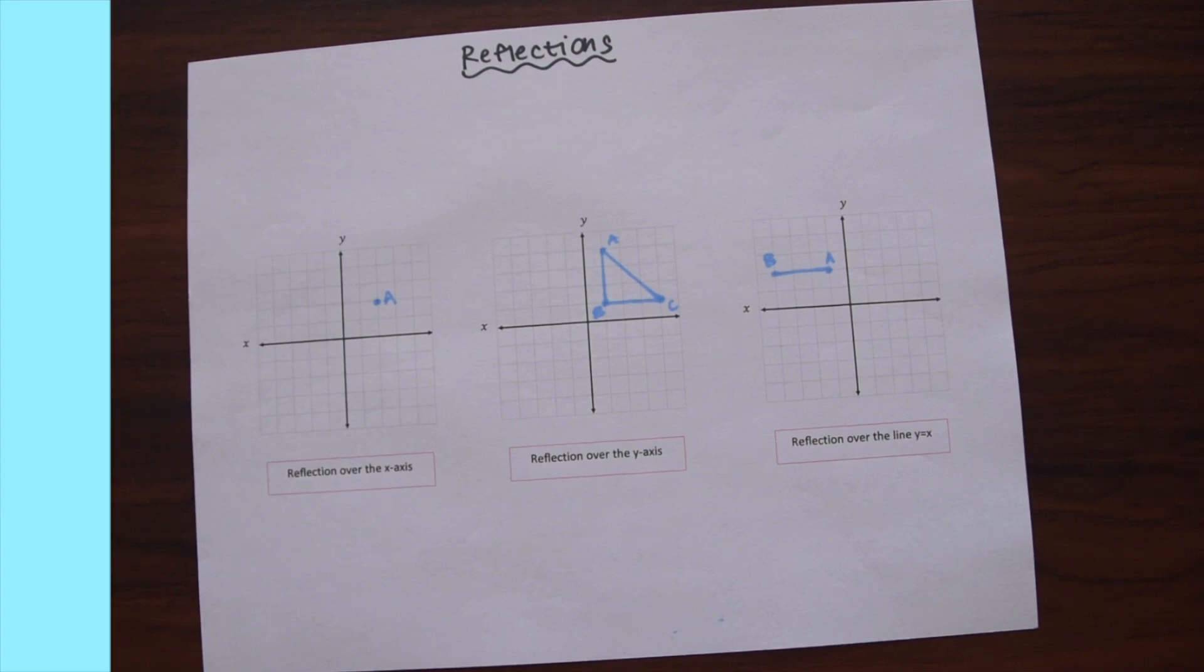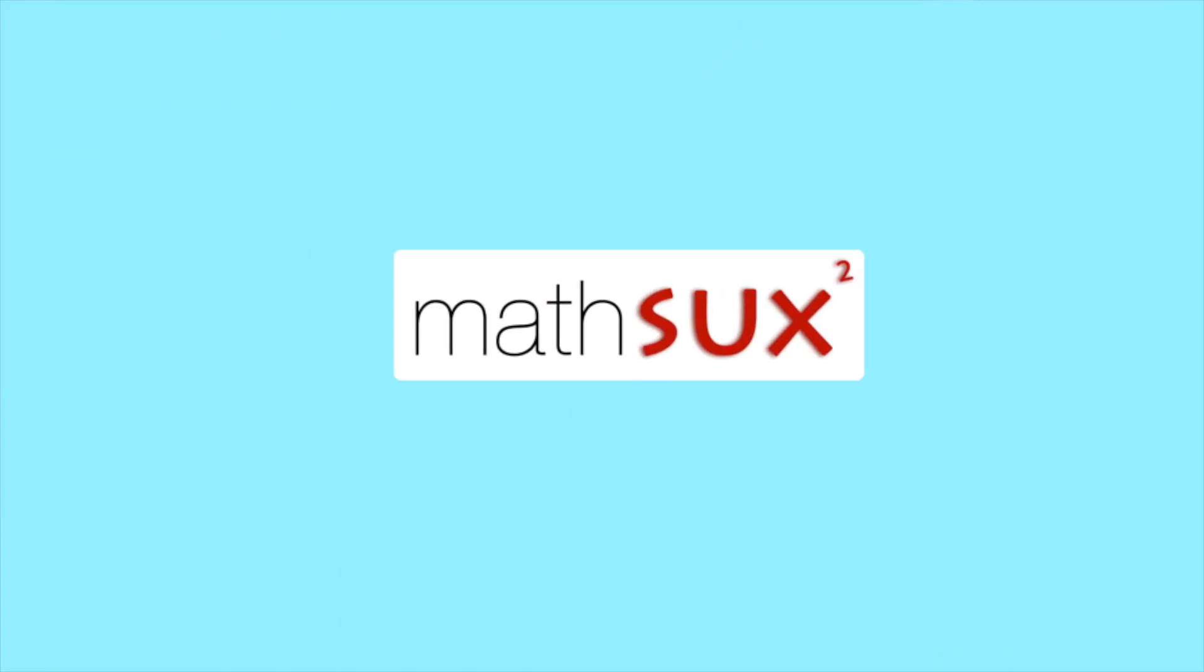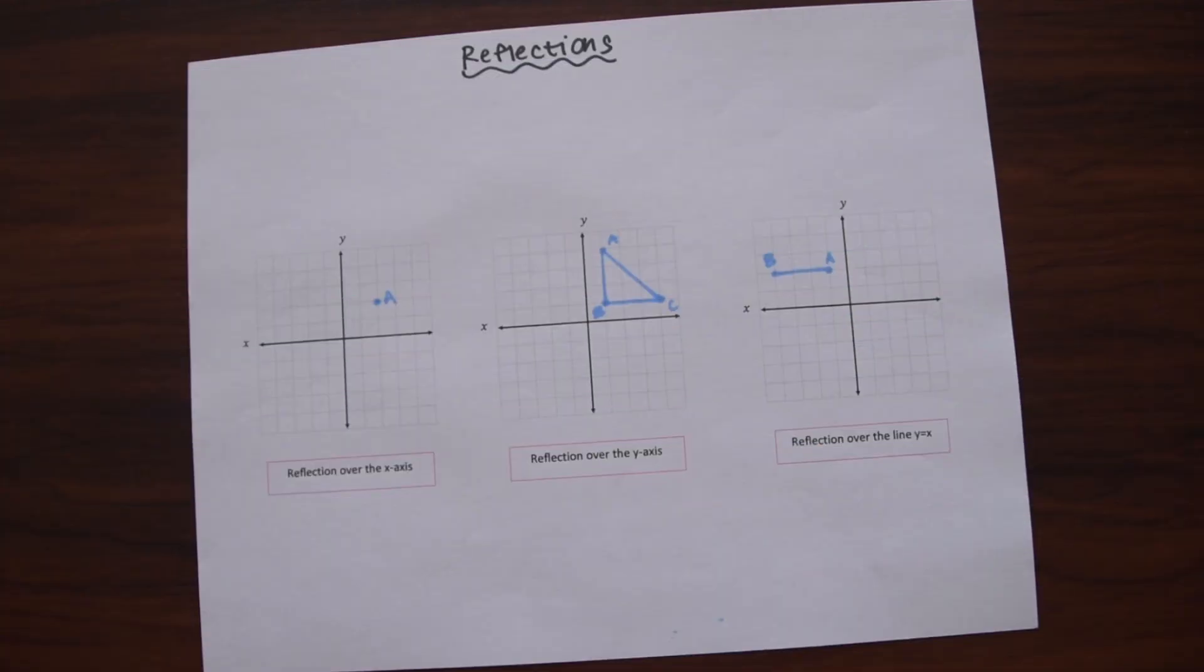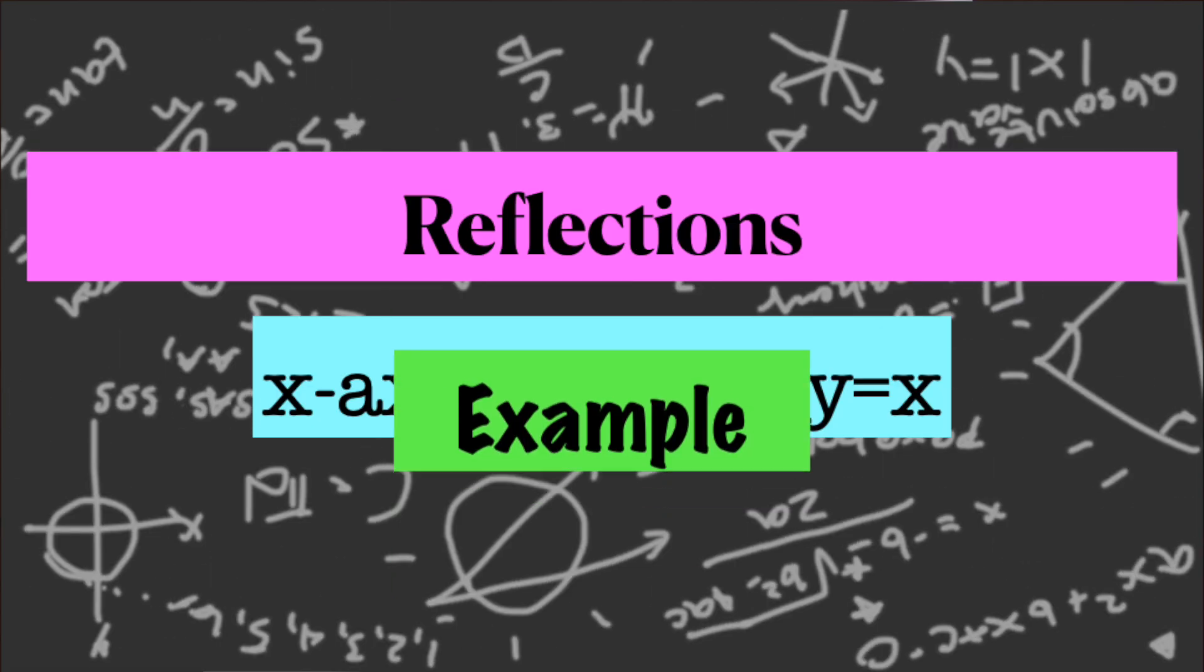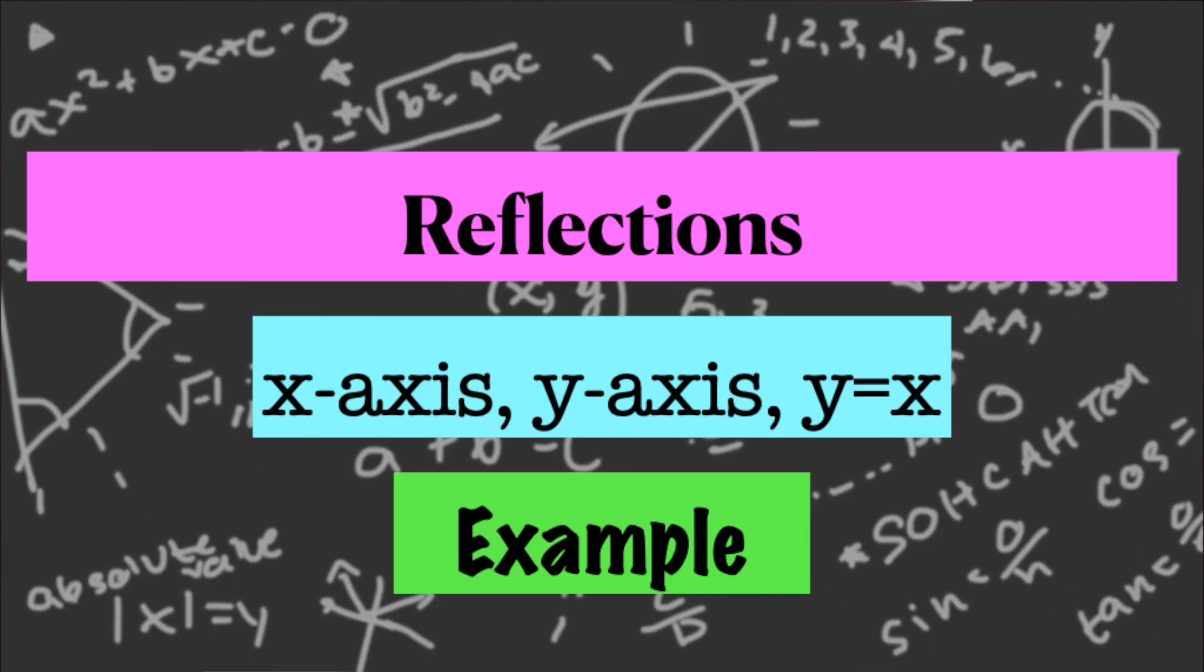Hi everyone and welcome to Math Sucks. This video is going to help you pass geometry. In this video we're going to go over reflections. First by looking at some simple reflections over the x-axis, y-axis, and over the line y equals x. Then we're going to look at a harder example when reflecting a shape onto itself.